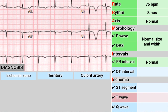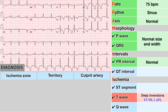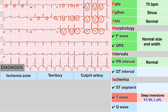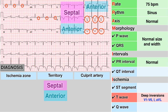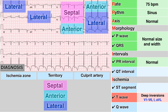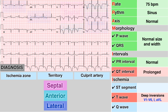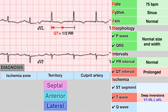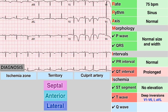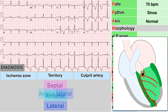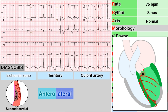The T waves are clearly abnormal. There are deep T wave inversions in leads V1 through V6 as well as leads 1 and AVL. The territories involved are therefore the septal, anterior, and lateral walls. Also, the QT is prolonged, measuring clearly more than half of the RR interval. There is no ST segment elevation. These findings are consistent with anterolateral subendocardial ischemia due to plaque rupture in the proximal LAD.